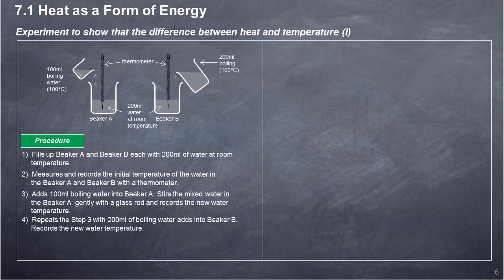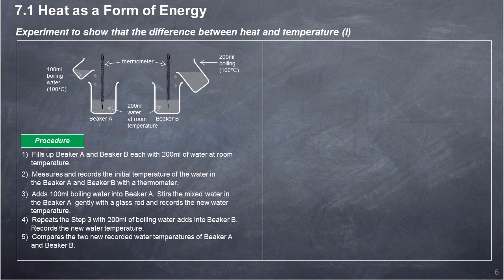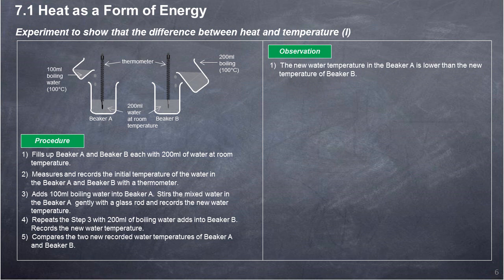Repeat step 3 with 200 ml of boiling water added into Beaker B. Record the new water temperature. Compare the two new recorded water temperatures of Beaker A and Beaker B. Observation: The new water temperature in Beaker A is lower than the new temperature of Beaker B.